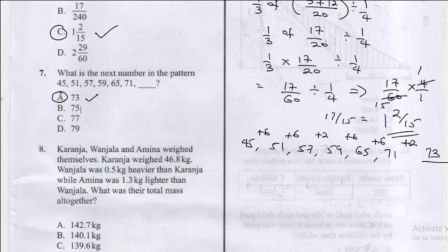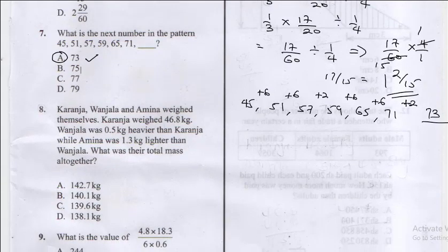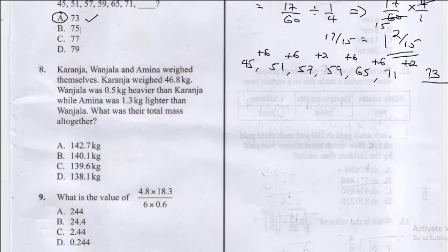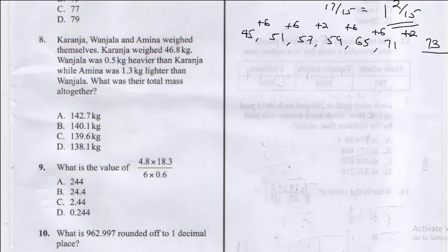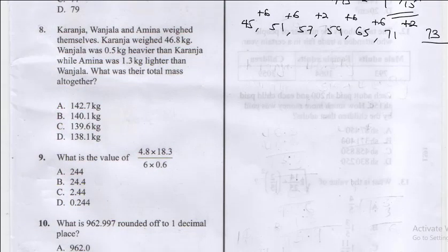Question eight says Karanje, Wanjala, and Amina weighed themselves. Karanje weighed 46.8 kg. Wanjala was 0.5 kg heavier than Karanje while Amina was 1.3 kg lighter than Wanjala. What was their total mass altogether?